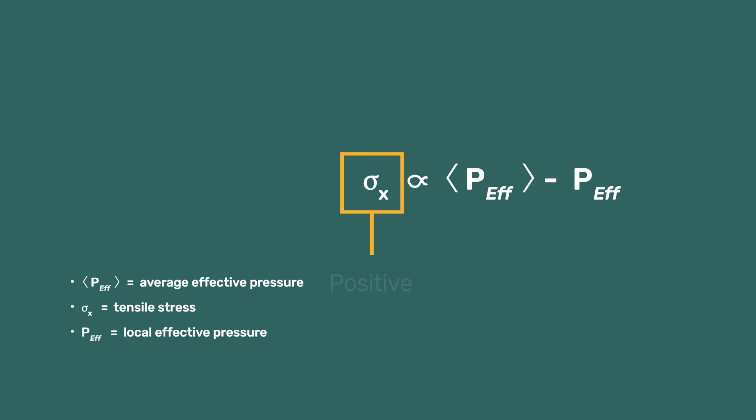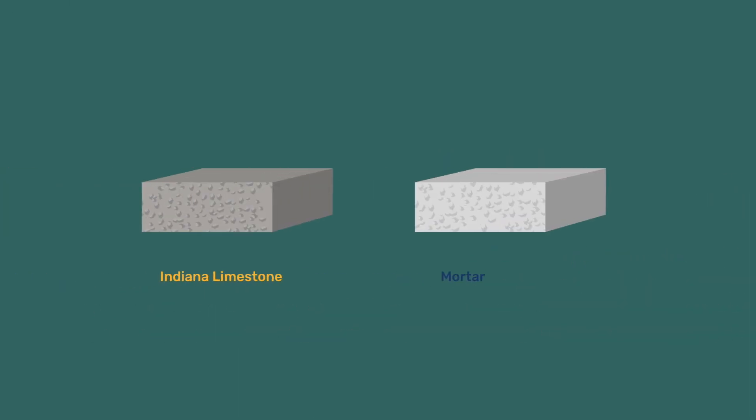Tensile stresses are by definition positive and the pore pressure is negative. Therefore, tension results when the local effective pressure is more negative than the average effective pressure, making their difference positive. Let us examine what this means for the Indiana limestone and a typical mortar.